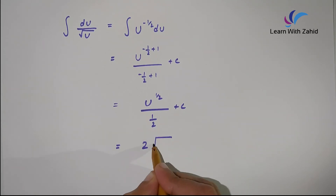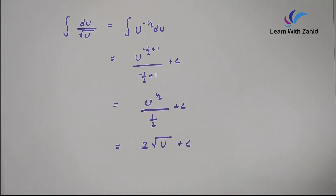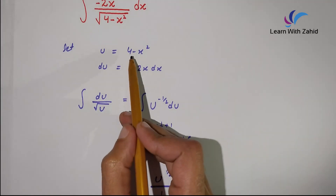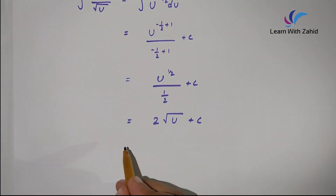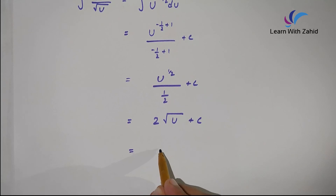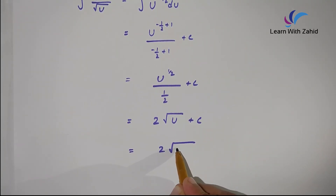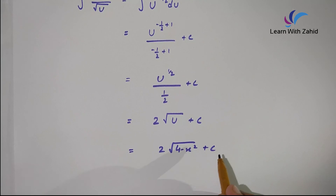This gives us 2 times square root of u plus c. In the last step we substitute back the value of u, that is 4 minus x squared. So our final result is 2 times square root of (4 minus x squared) plus c.